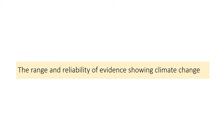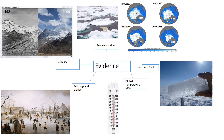So how do we know that the climate is changing? We need to be able to discuss the range and reliability of evidence that shows climate is changing. To collect evidence, scientists can gather data from several different places. For example, global temperature data — we've been measuring temperature with thermometers for around 150 years, giving us an accurate record showing that on average global temperatures have risen by around one degree Celsius since the industrial revolution.